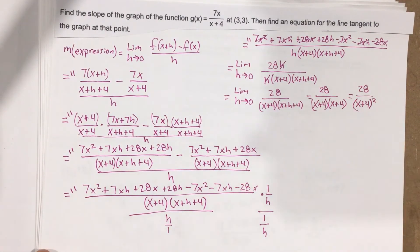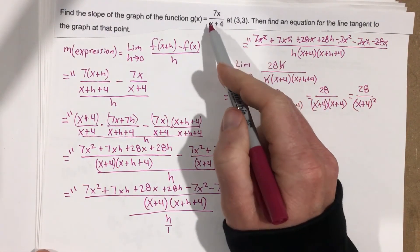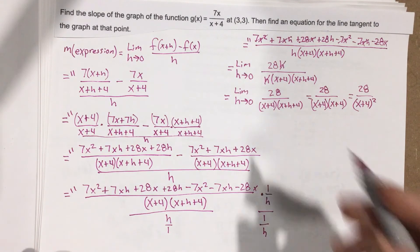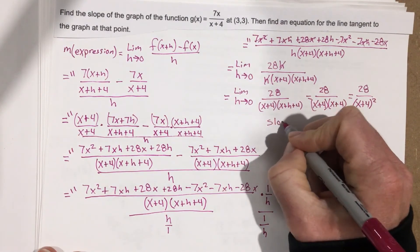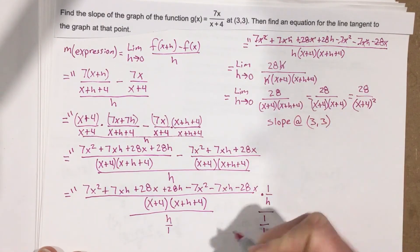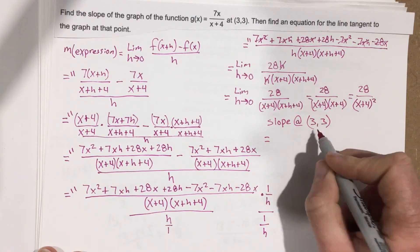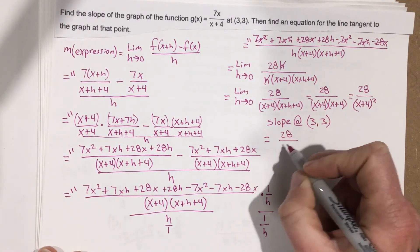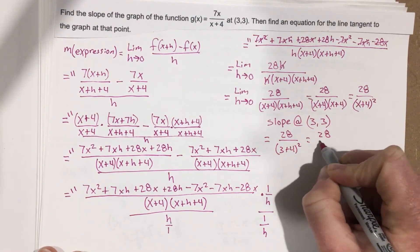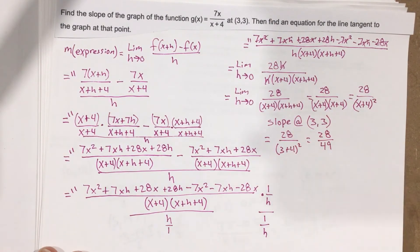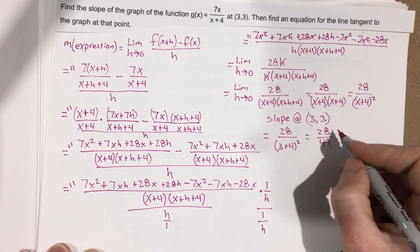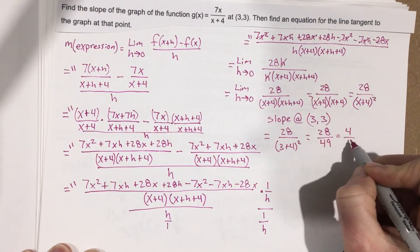So 28 over the quantity x plus 4 squared is our expression for the slope at any point on that function. Now we want to find the slope at 3 comma 3, so we plug in 3 for x and get 28 over 3 plus 4 squared, which is 28 over 7 squared, which is 28 over 49. Dividing both by 7 gives us 4 over 7 for the slope.